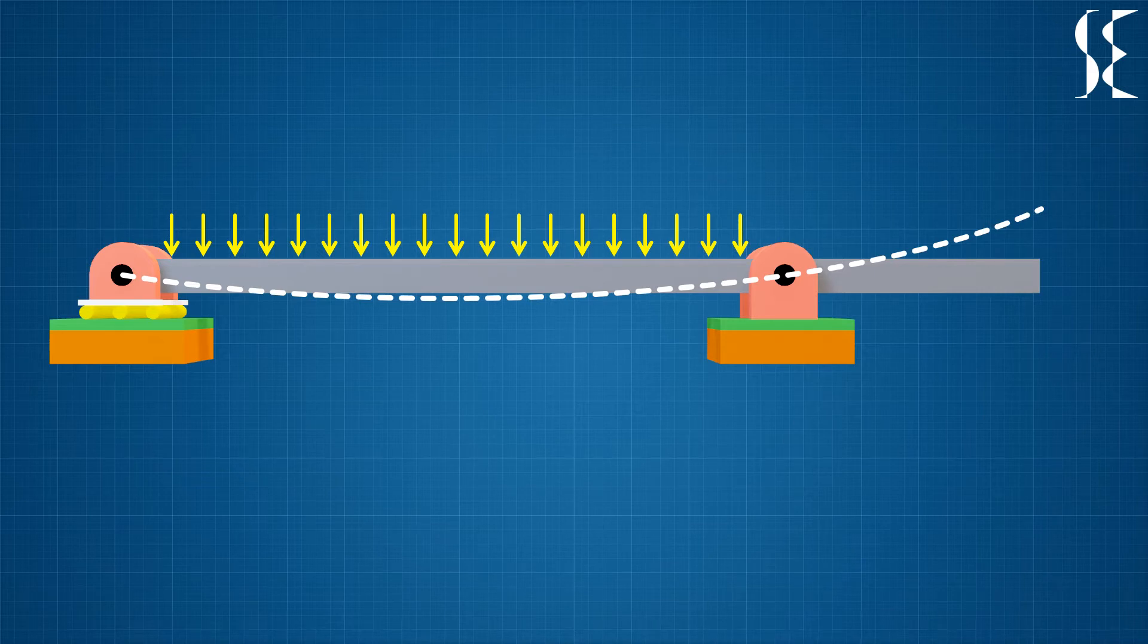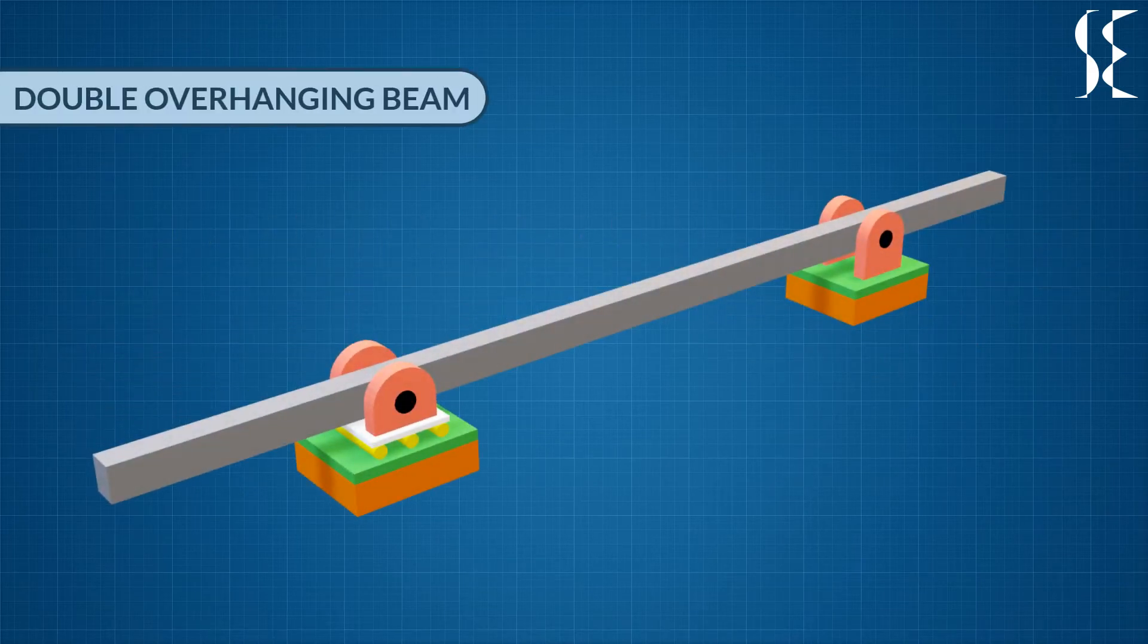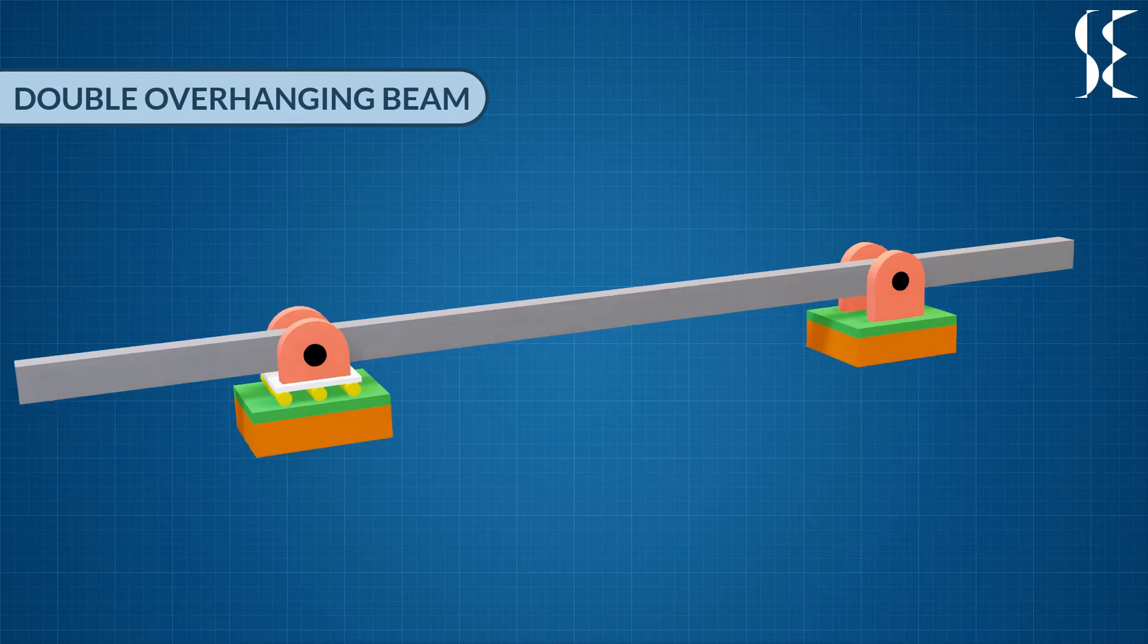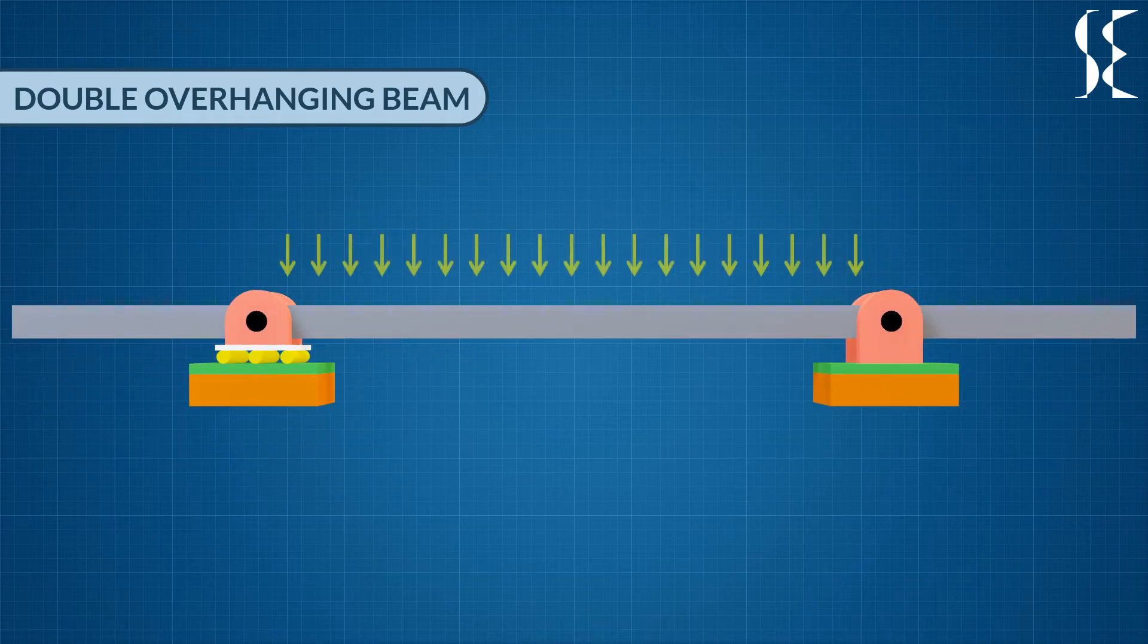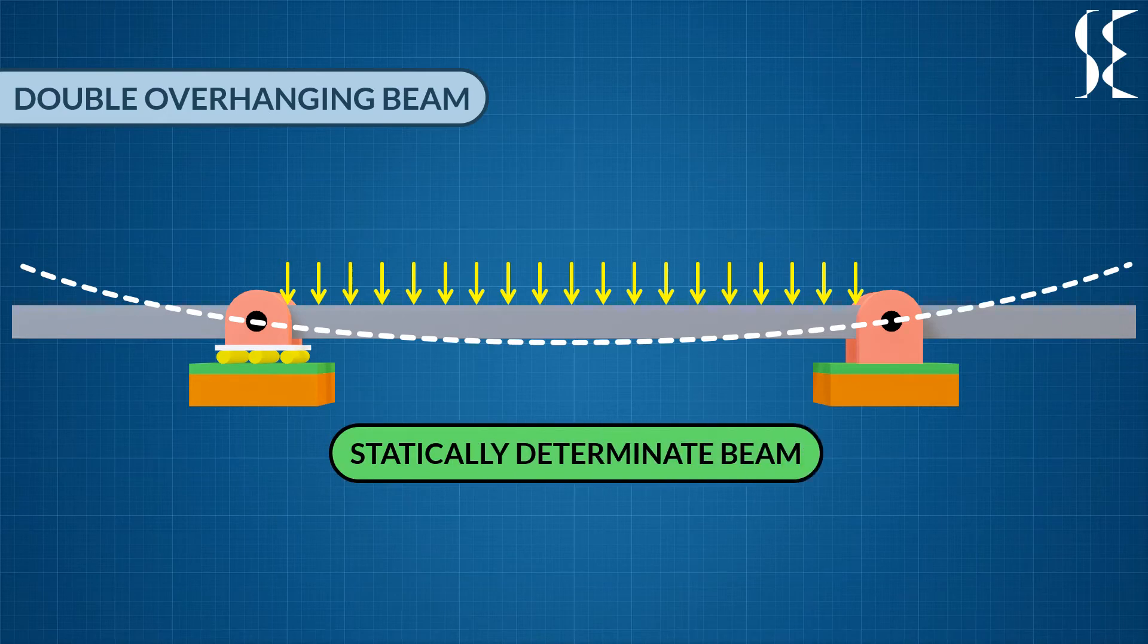If the overhang is from both the ends, then the beam is called double overhang and the deflected shape on uniform loading would look something like this. These arrangements are also statically determinate with 3 unknowns and 3 equilibrium equations.